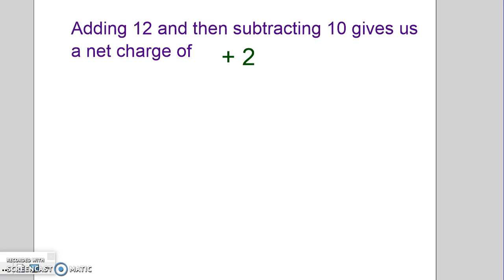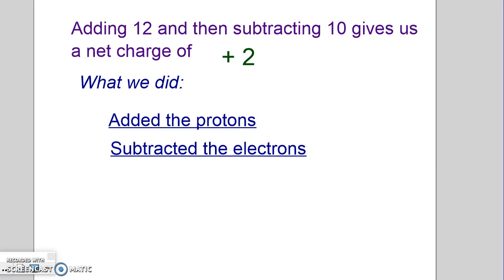So adding the 12 and subtracting the 10 gives us a net charge of plus 2. So, just remember, we added the protons and we subtracted the electrons. To get the charge, that's what we do.